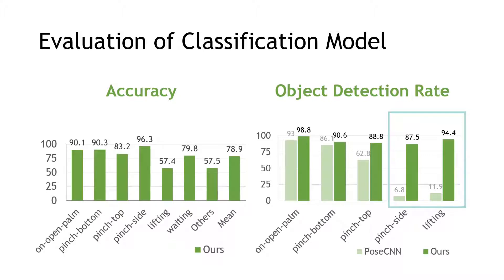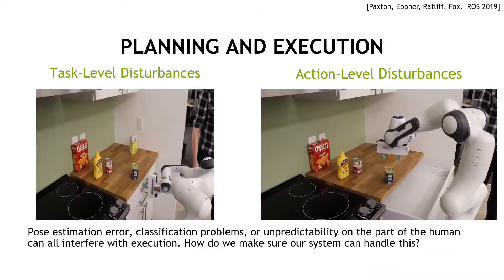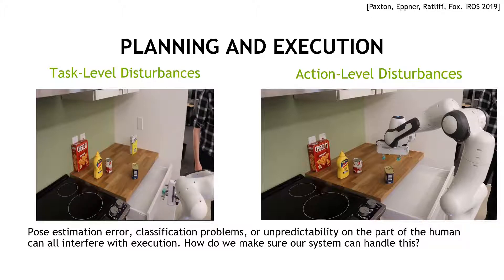Chris will further explain the details of our task planning algorithm. Let me explain how we represent the robot task plan for human-to-robot handover. In particular, we need to be wary of two different types of disturbances that can occur during task execution. The first is what we call task-level disturbances,